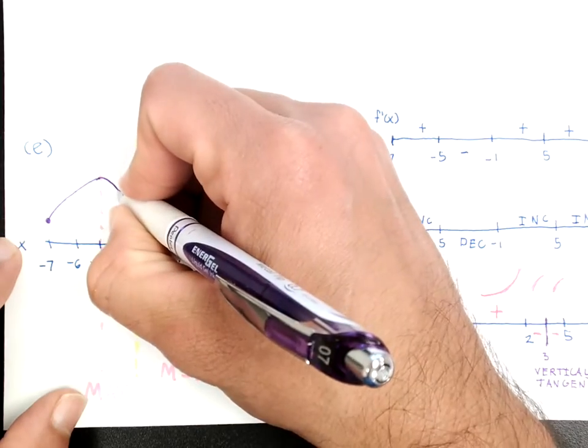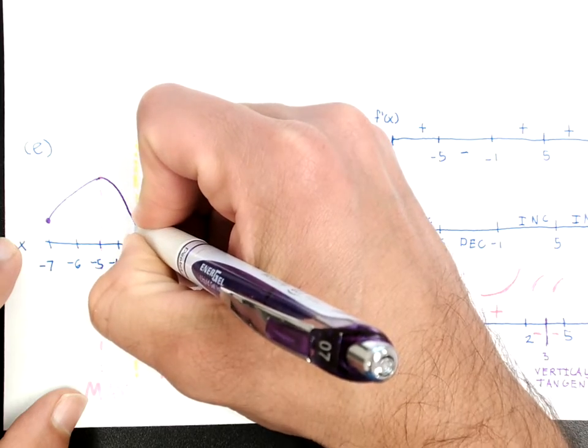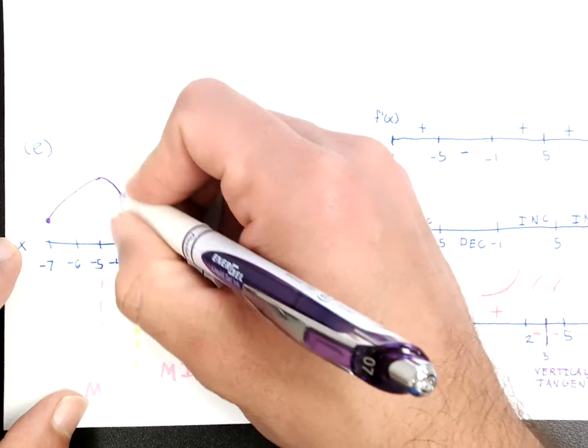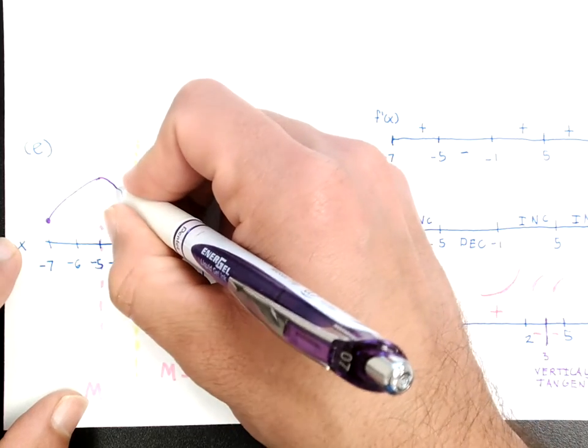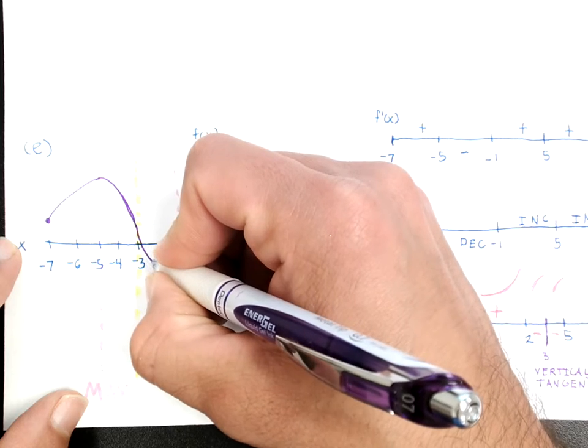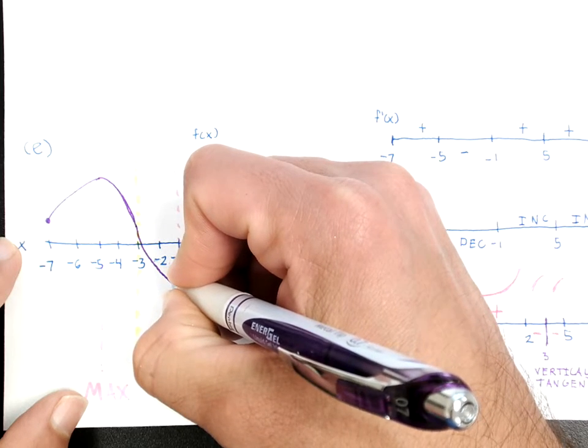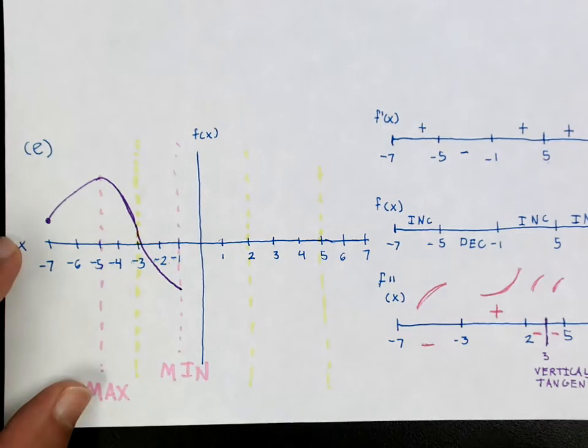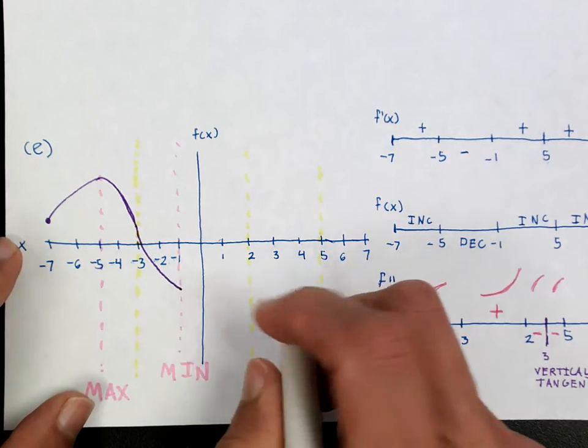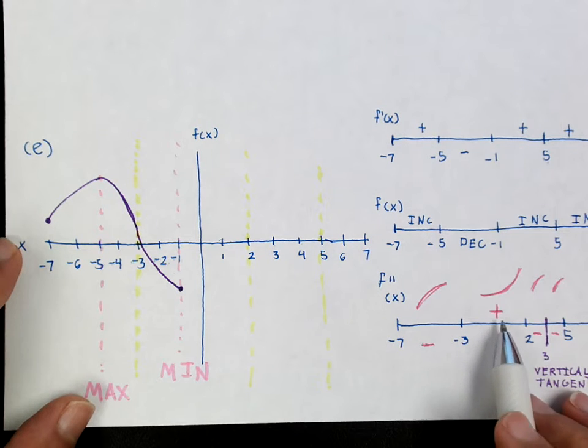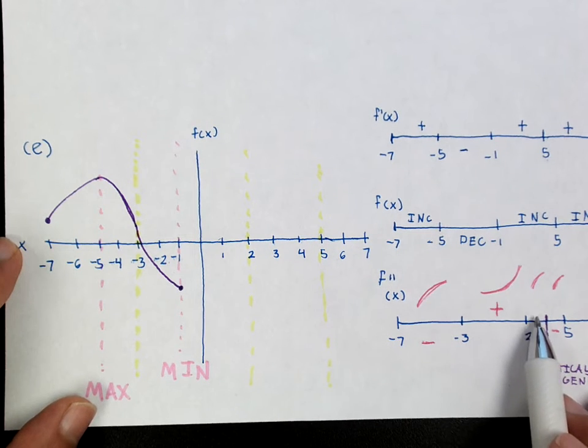Now once I actually hit this negative 3, then I'm going to change concavity. So notice this is concave down still. I'm going to change to concave up. And when I change to concave up, I'm going to go all the way to here where I have a minimum. So I know that I'm not going to go any farther down than that.